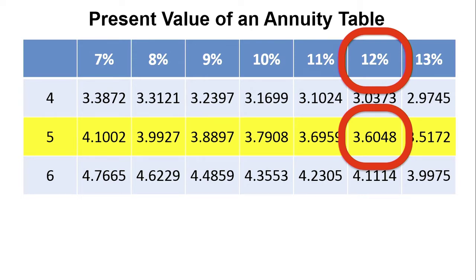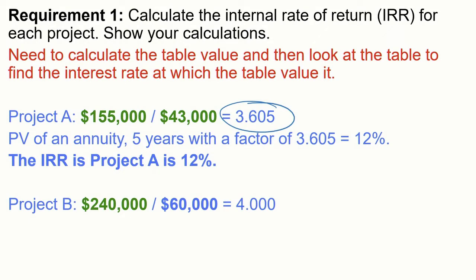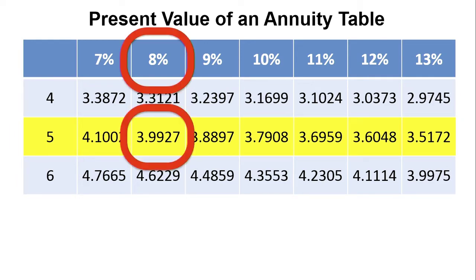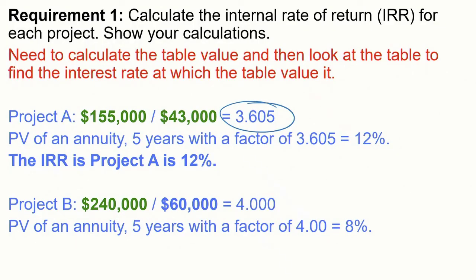We use the same approach for Project B. Rather than multiplying the cash flow by the factor to get the investment, we work backwards. Project B has an initial investment of $240,000 and a cash flow of $60,000 per year. Dividing 240 by 60 gives a table value of 4.0. Looking at the five-year row of the annuity table, the value 3.9927 is closest to 4.0, so the IRR for Project B is 8%.